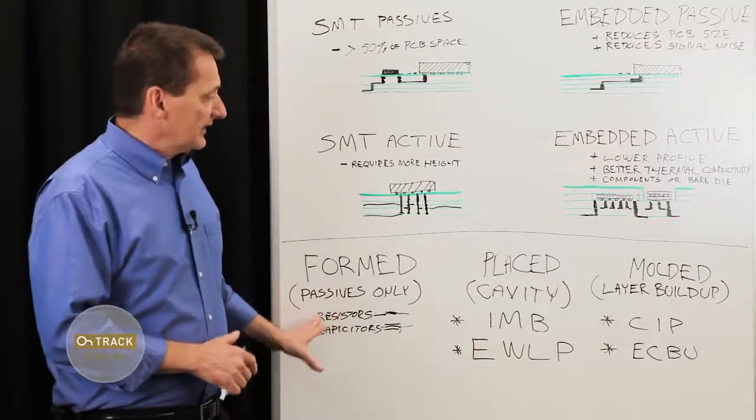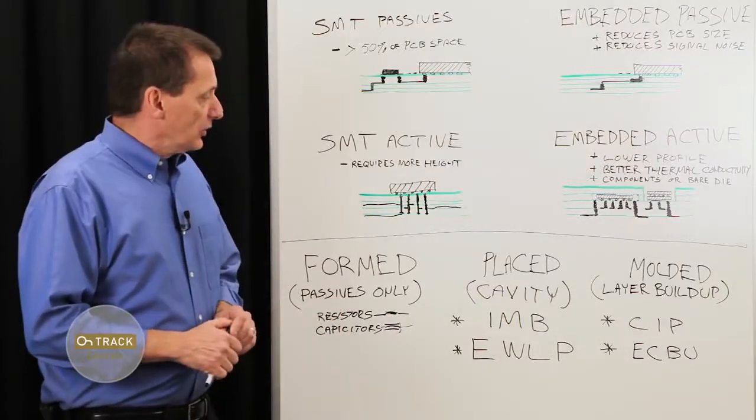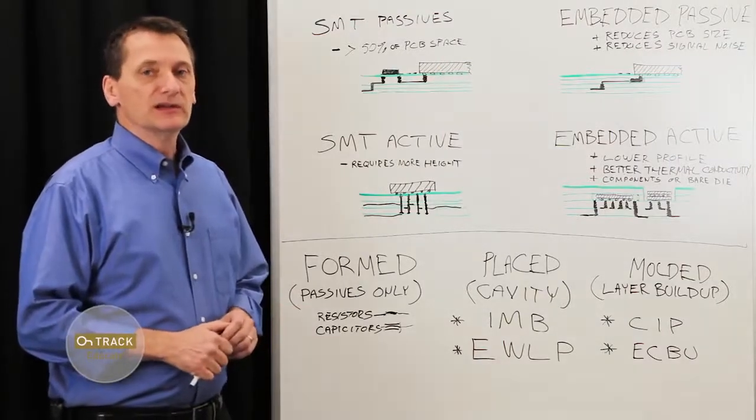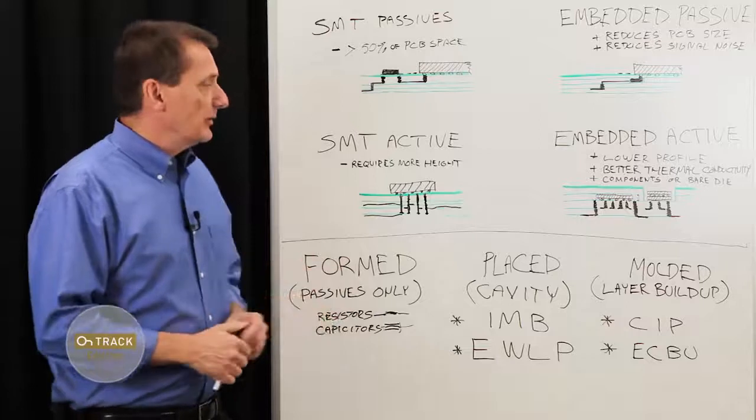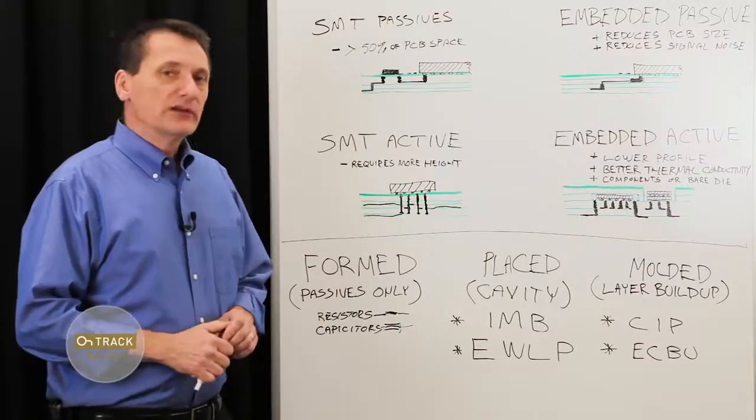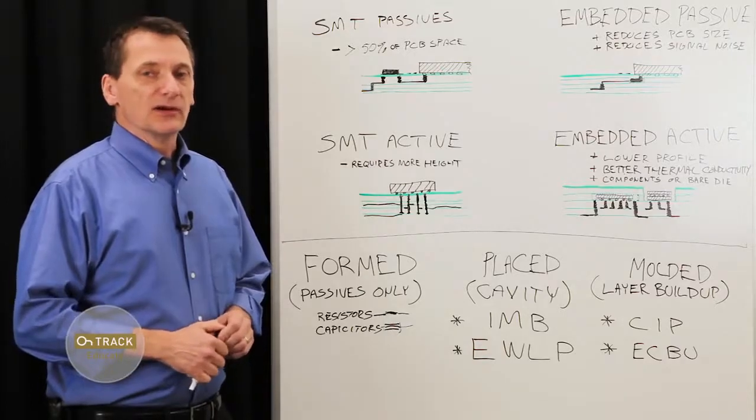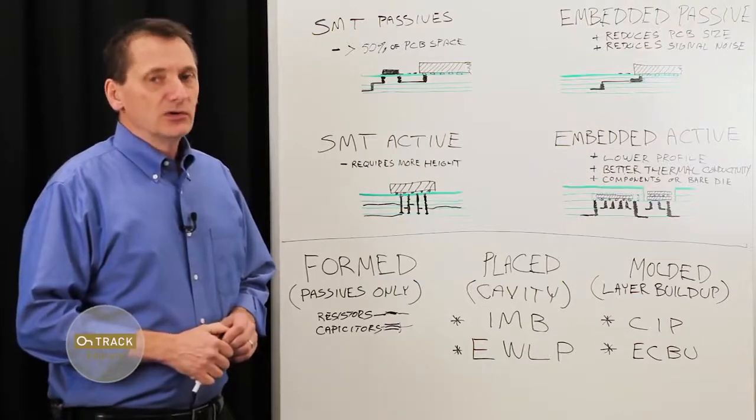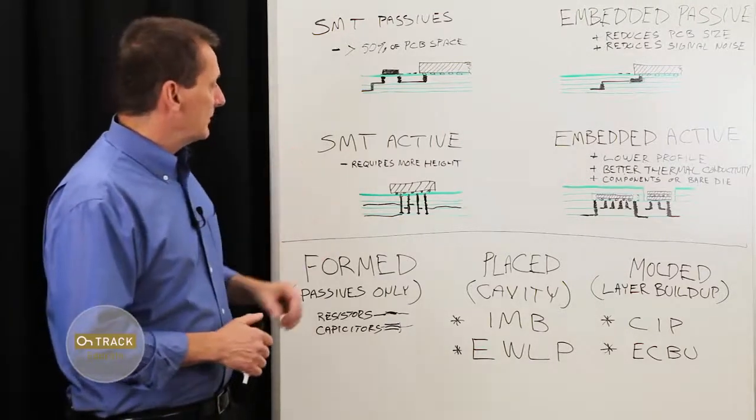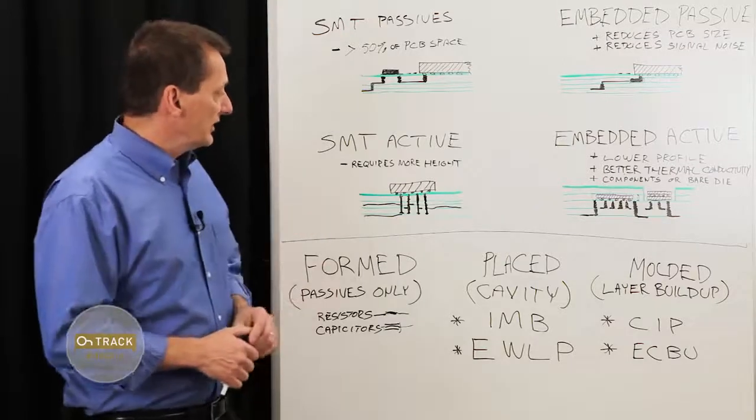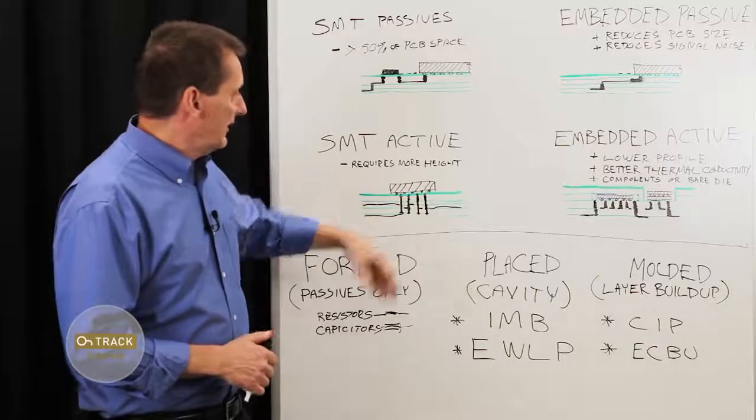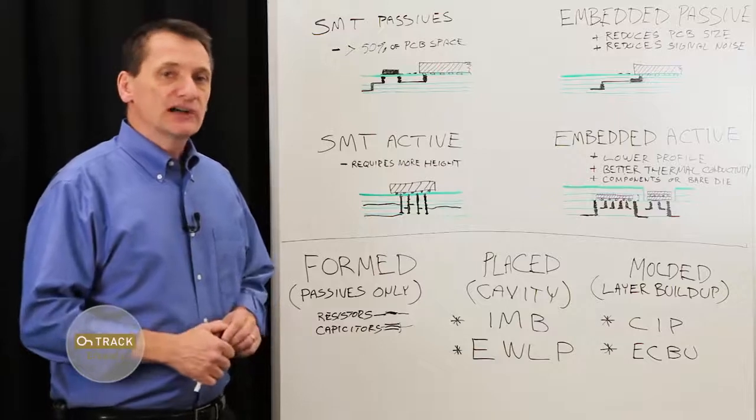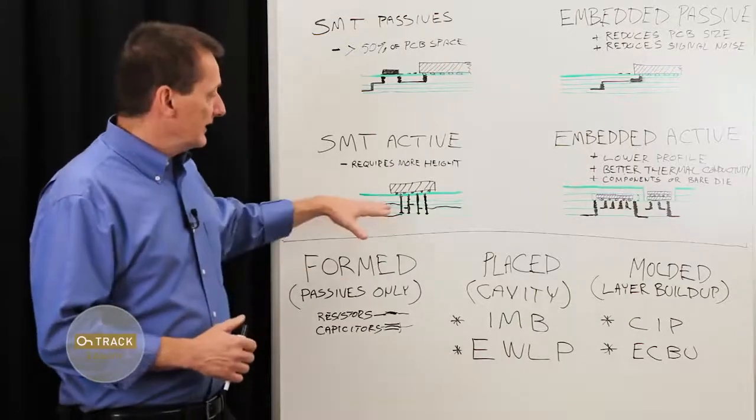Now, to get this information to the fabricator, you're going to discover that the typical Gerber format is not going to be applicable. Gerber just provides information about copper imaging. You'll definitely want to investigate the newer formats such as Gerber X2, IPC 2581, or ODB++. These newer formats take into account embedded components and can convey this information of component placement, component layer, component orientation to the fabricator. Because it's the fabricator that will actually be placing the parts within the PCB.